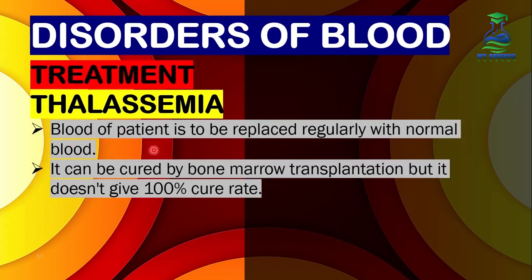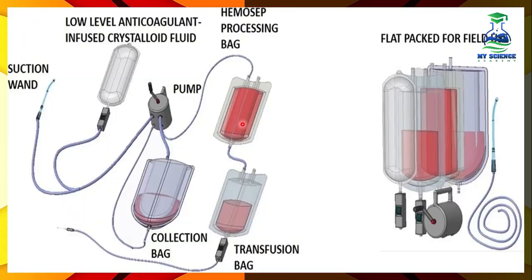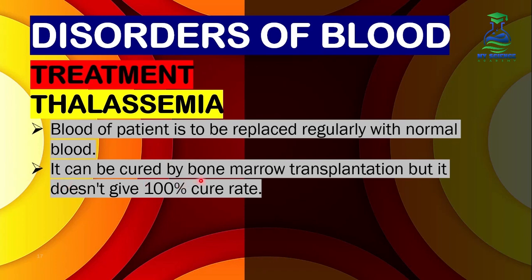What is the treatment of thalassemia? Number 1: the patient's blood is regularly replaced with normal blood from a donor — a healthy person. Number 2: it can be treated by bone marrow transplantation, but it does not give a 100% cure rate, and this treatment is also very expensive.